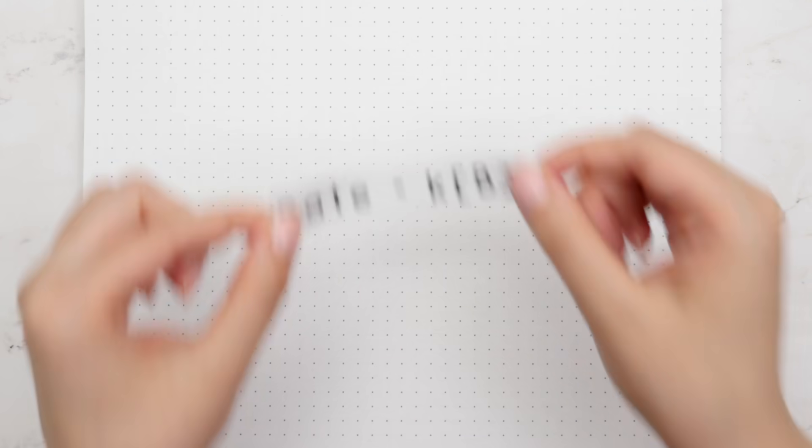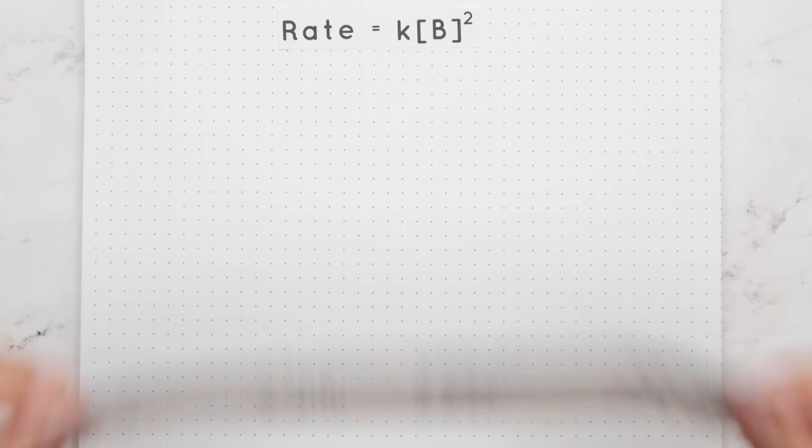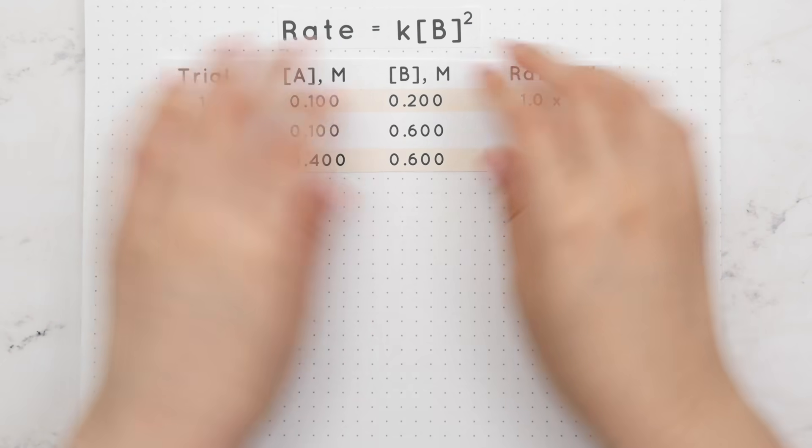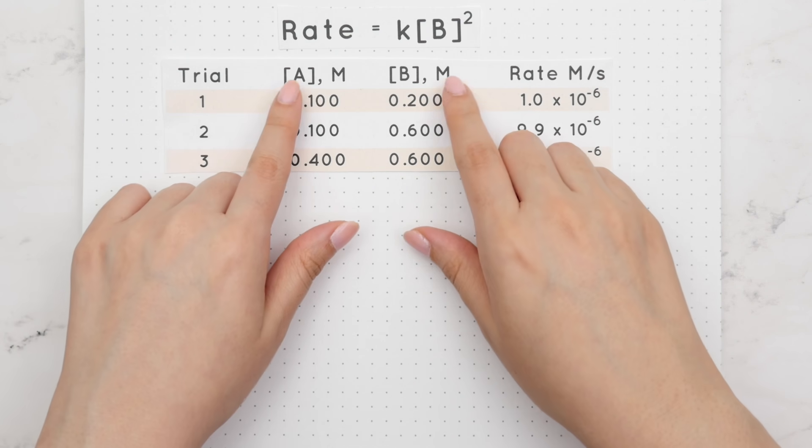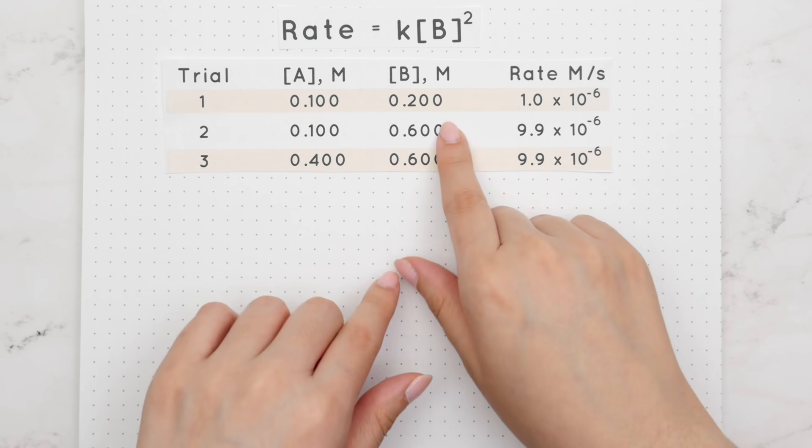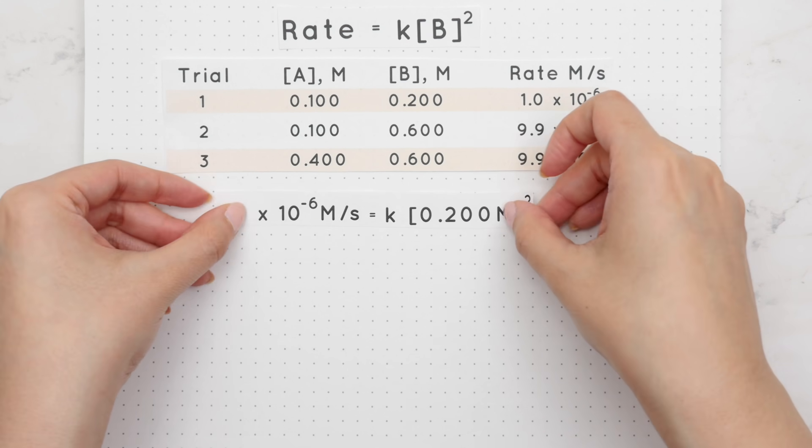We must use the rate law to find the rate constant k. Using the known values in the table we will plug that all in. Since all our numbers in the table follow some sort of pattern, it does not matter which trial we use. In this case we will use trial 1 and plug in the values.